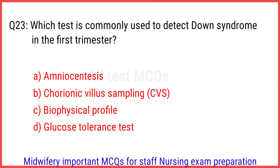Q23. Which test is commonly used to detect Down syndrome in the first trimester? The right answer is option B: Chorionic villus sampling.